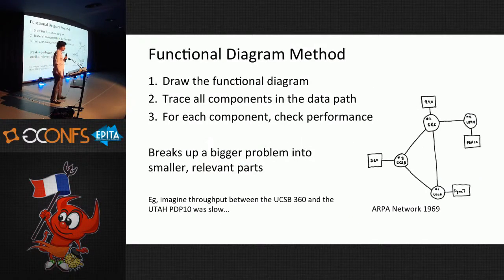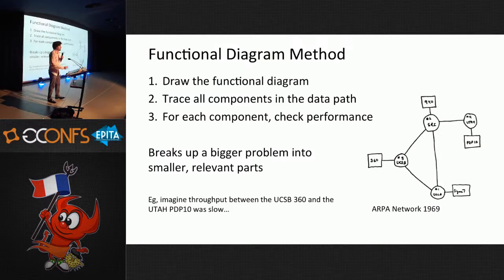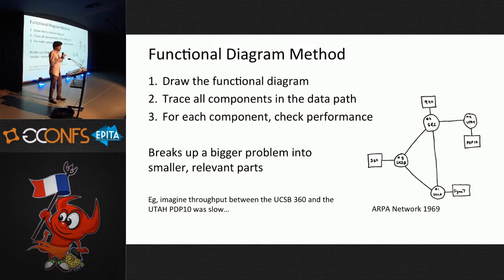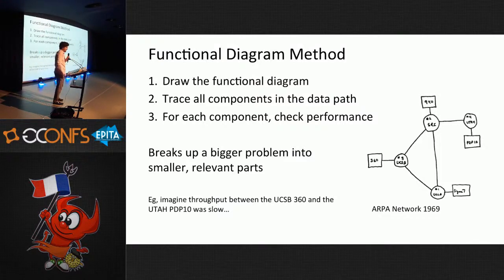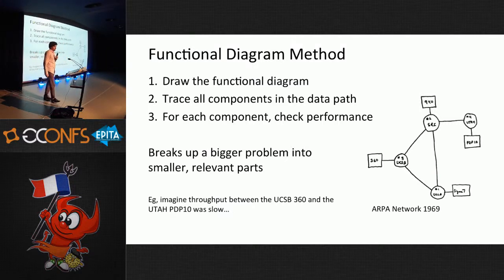The functional diagram method is where you want a functional diagram, trace the components in the data path, and then for each component check performance. If you're told 'the internet is slow,' you can break it up into a handful of pieces and go through them one by one to root-cause the slow part. That's what the functional diagram method is about — breaking a big problem into smaller parts.